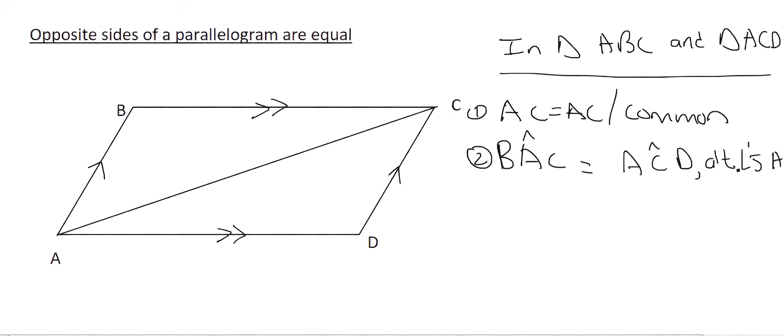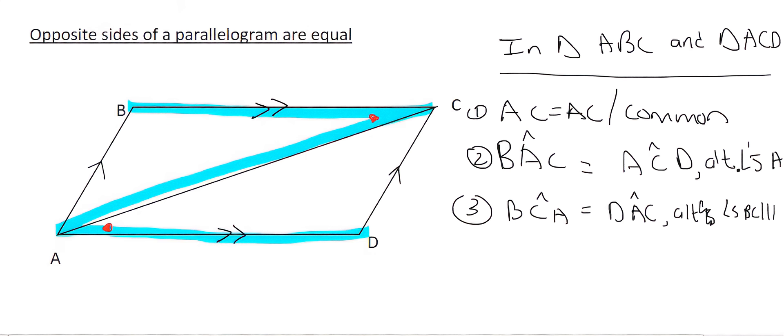But now what about the Z over here? Did you see that one? Well, because of that Z, we know that this corner angle is going to be the same as that corner angle over there. And so that's going to be B, C, A is going to be the same as D, A, C. And that's also going to be because of alternating angles. And that's now because of BC being parallel to AD.